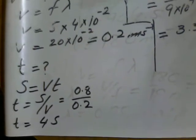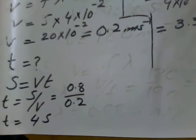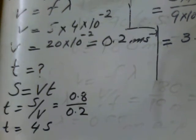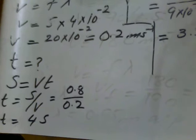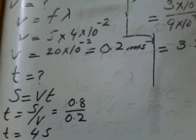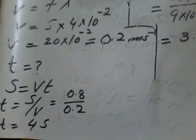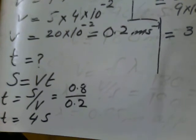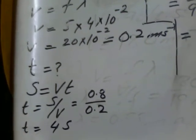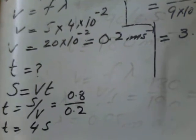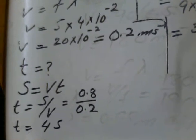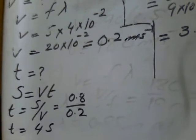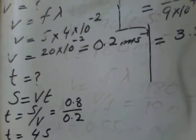Now we have to find the time. So S is equal to vt. After rearranging this equation, t will be equal to S over v. By putting and simplifying the values, we get 4 seconds time. So this is the time in which a wave of 5 Hz frequency will cover 80 cm in a ripple tank.